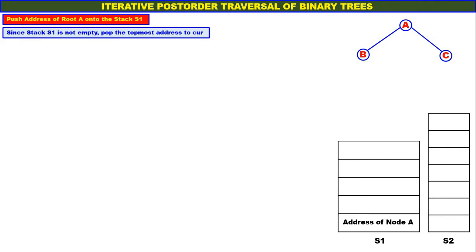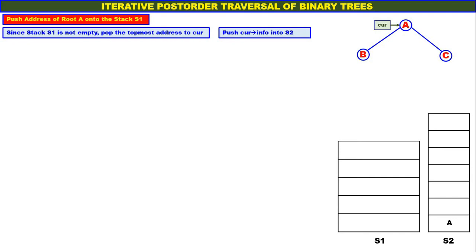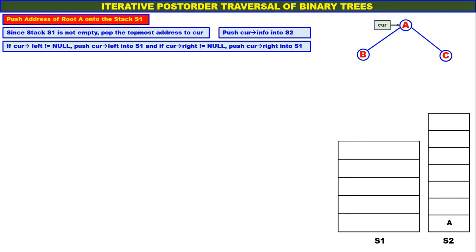Since stack S1 is not empty, pop the topmost address to CUR. Whenever stack S1 becomes empty, we stop. Pop address of node A and assign it to CUR. Push CUR info into S2, so A is pushed onto S2. CUR left is not equal to null — it is B — so address of node B is pushed onto the stack. CUR right is not equal to null — it is address of node C — that is also pushed onto the stack.